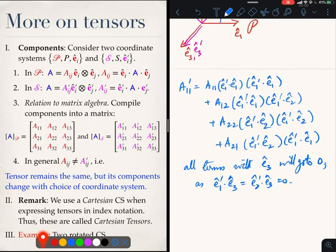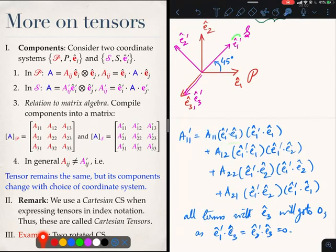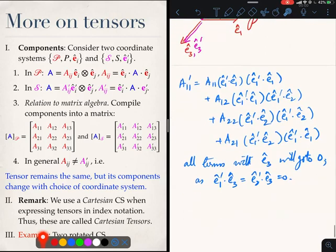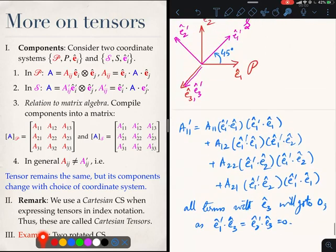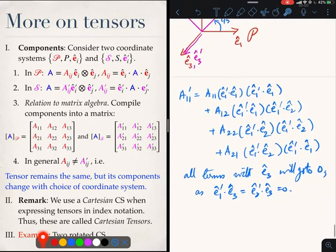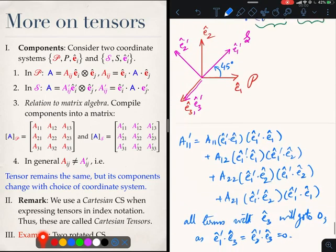We can now compute what is E1 prime dot E1. E1 prime dot E1 is 1 by root 2. What is E1 prime dot E2? E1 prime dot E2 is also 1 by root 2. When you do this, everything is done.